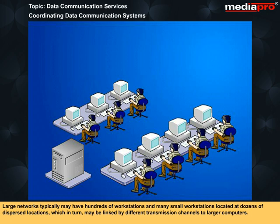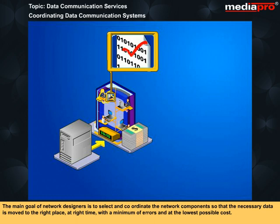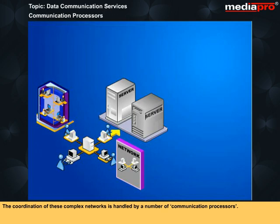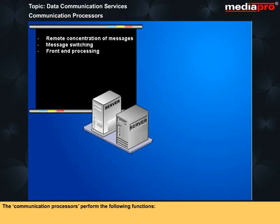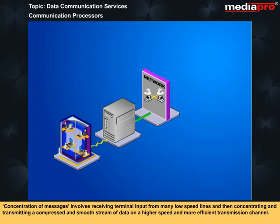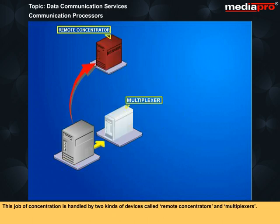Large networks typically may have hundreds of workstations located at dozens of dispersed locations, which in turn may be linked by different transmission channels to larger computers. The main goal of network designers is to select and coordinate the network components so that the necessary data is moved to the right place at the right time with a minimum of errors and at the lowest possible cost. The coordination of these complex networks is handled by a number of communication processors. One function is the concentration of messages: receiving terminal input from many low-speed lines and concentrating it into a compressed, smooth stream of data on a higher-speed transmission channel, handled by remote concentrators and multiplexers.